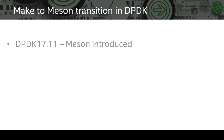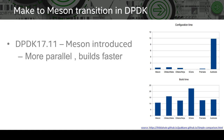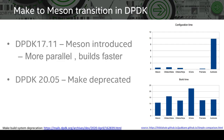In DPDK 1711, Meson was first introduced as a replacement for Make because it was more parallel and hence faster. Here are some stats which clearly show Meson to be faster compared to other similar tools. As a consequence, in DPDK 2005 Make was deprecated and removed from 2011.